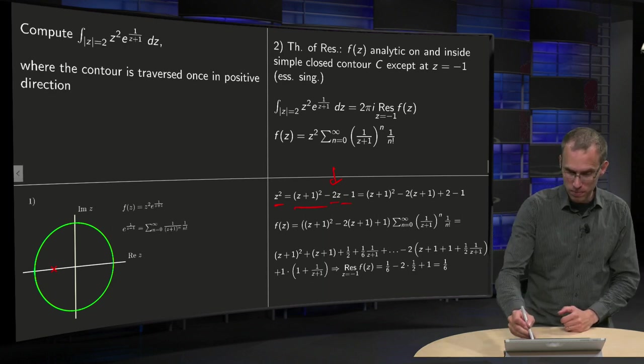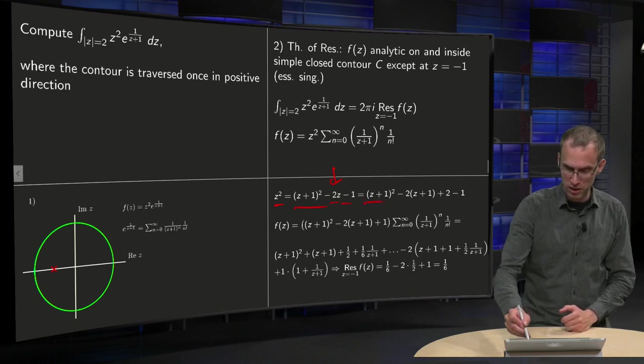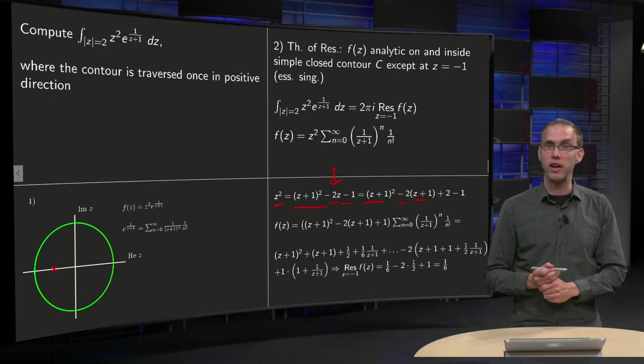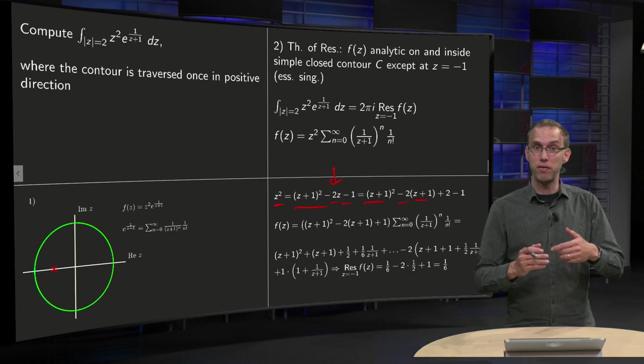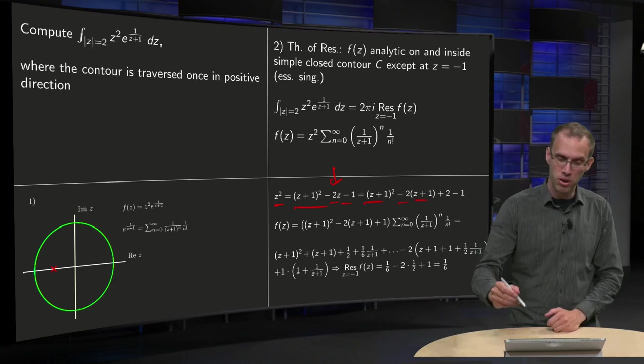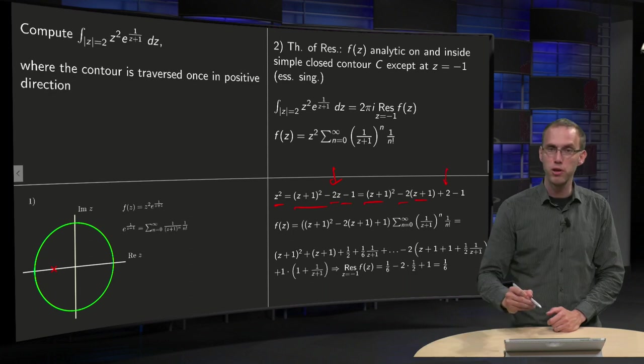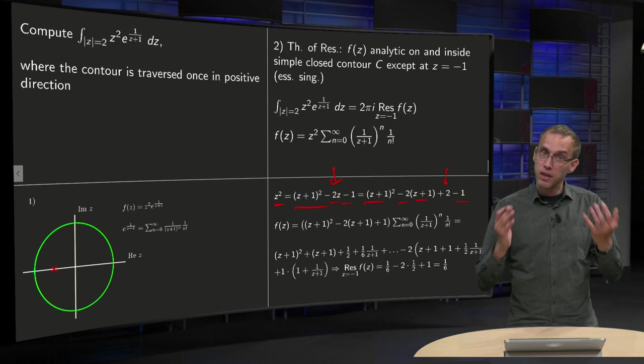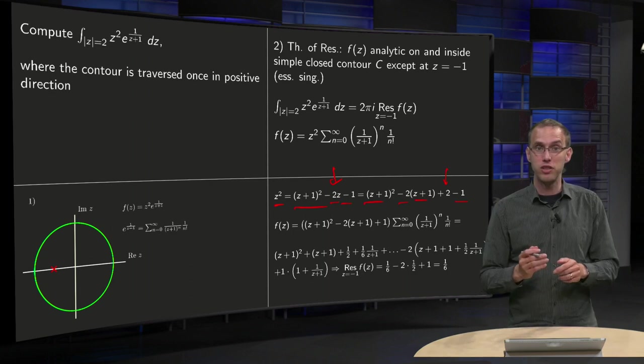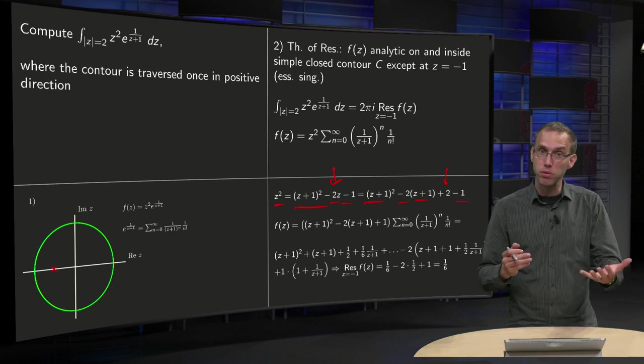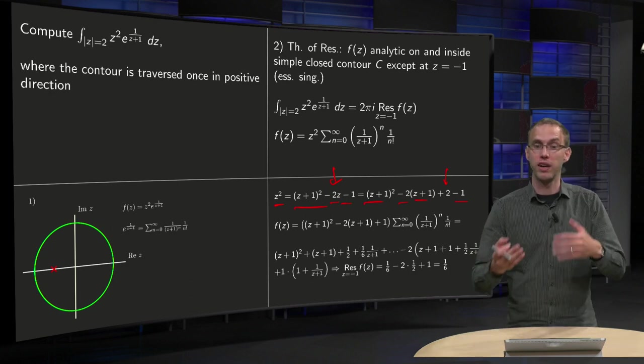No problem, you can do the same trick. You leave the z plus 1 squared, and you turn the z with the minus 2 into z plus 1. But what have you done? You have instead of a minus 2z, you have a minus 2z minus 2. OK, so you also have to add a plus 2, and then the minus 1 was there all the time. So now you have expanded your term z squared, or you have rewritten your z squared in terms of z plus 1 squared, z plus 1 and a constant.